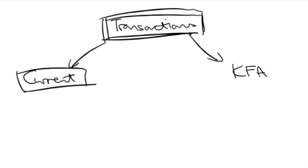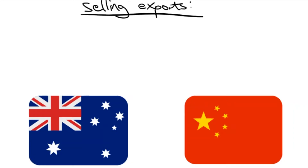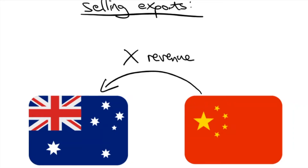Now you understand whether transactions are credits or debits, the next step is to figure out which accounts they actually fall into. The balance of payments is broken down into the current account on the left and the capital and financial accounts on the right. The current account records transactions that are earnings that are non-reversible, whereas the items on the right are reversible. Non-reversible means it's expected to only go one way. For example, if I sell exports to China and make revenue from that, that is now my money — it's going one way, and that's why we call it non-reversible.